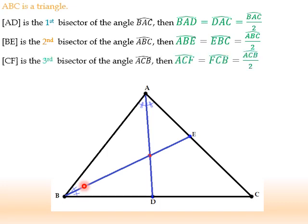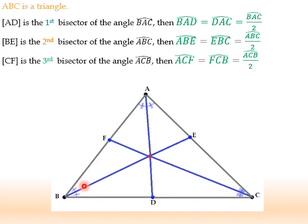The third bisector here is CF. It's a bisector of ACB, so I can clearly say that ACF equal to FCB. Each one of them is half of the angle ACB.